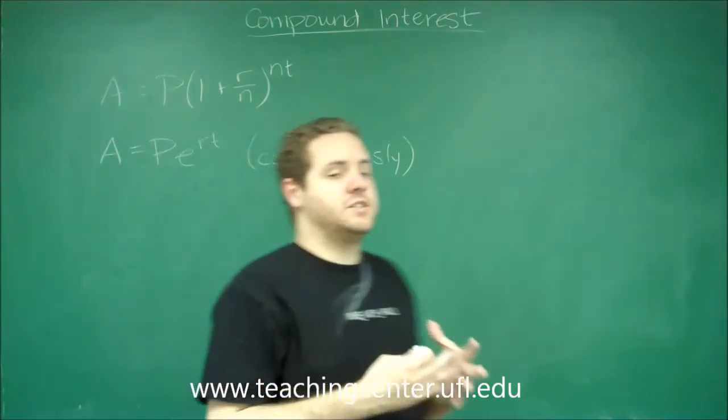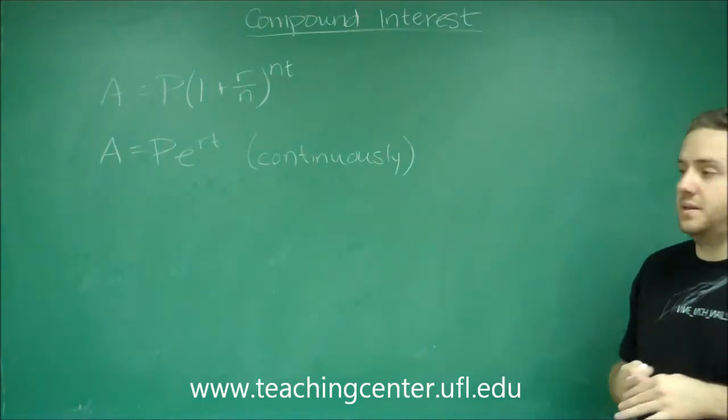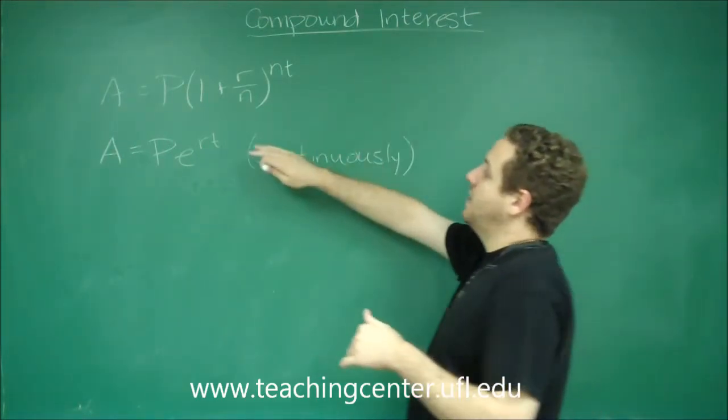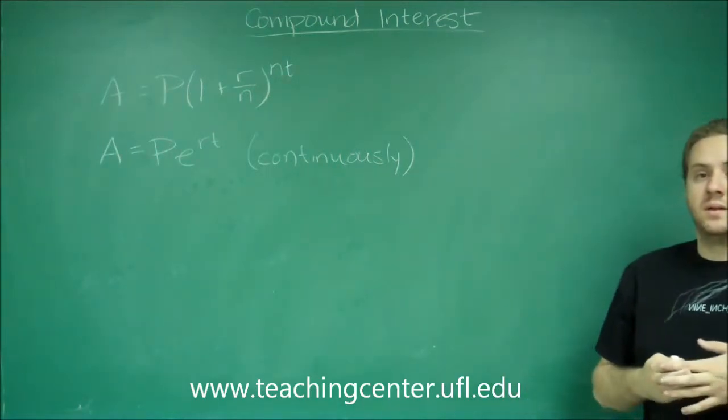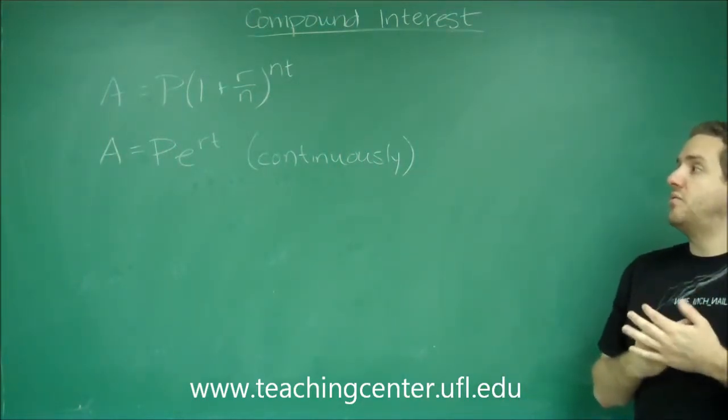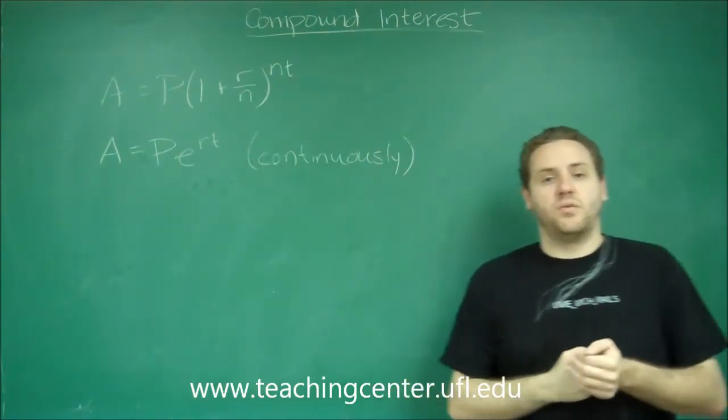So I don't want to say years specifically, because occasionally you're going to get one where the time period is not exactly a year. So T is how many time periods. N is how many compoundings per time period. And R is the rate. So finding out how much money you would have at the end is a simple matter of using these formulas.